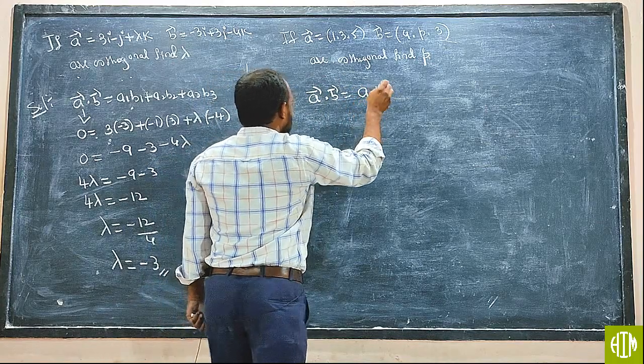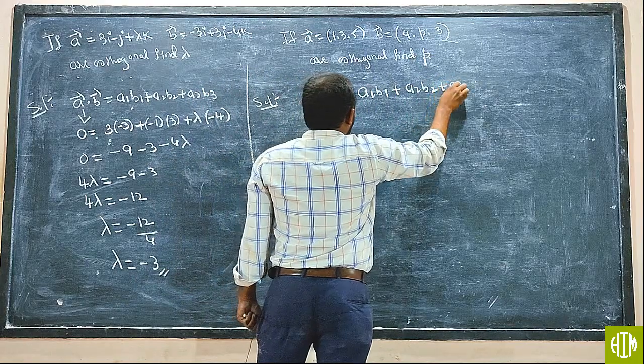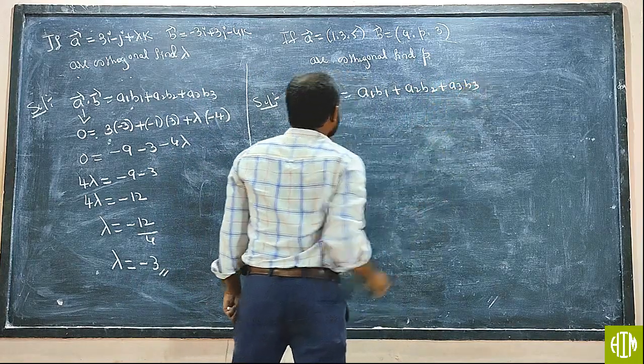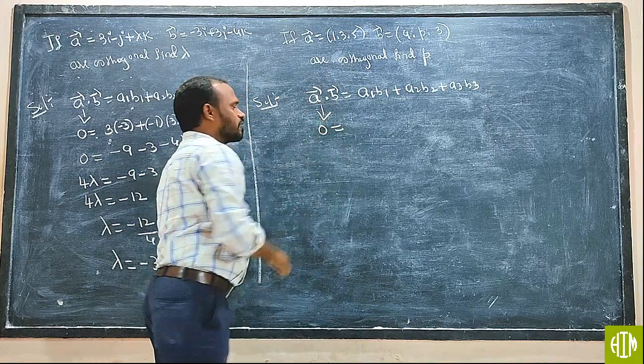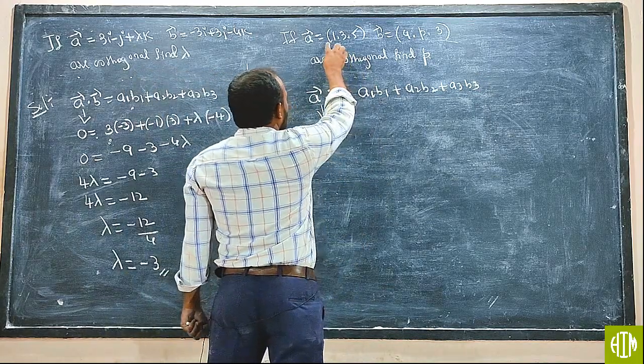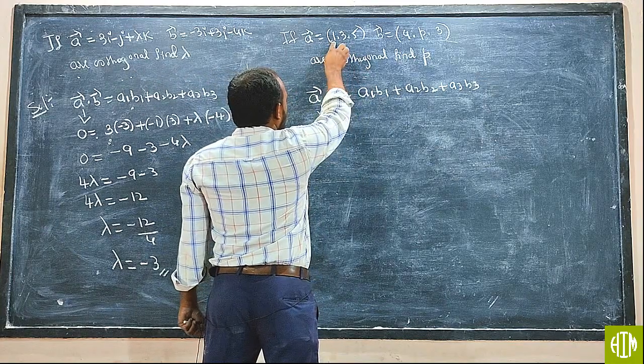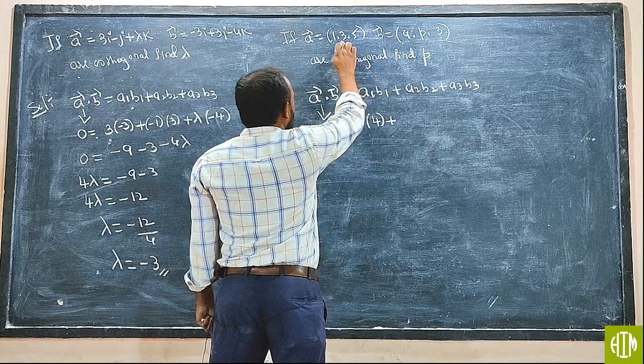A1 B1 plus A2 B2 plus A3 B3. So A1 is 1, B1 is 4. A2 is 3, B2 is P. A3 is 5, B3 is 3.